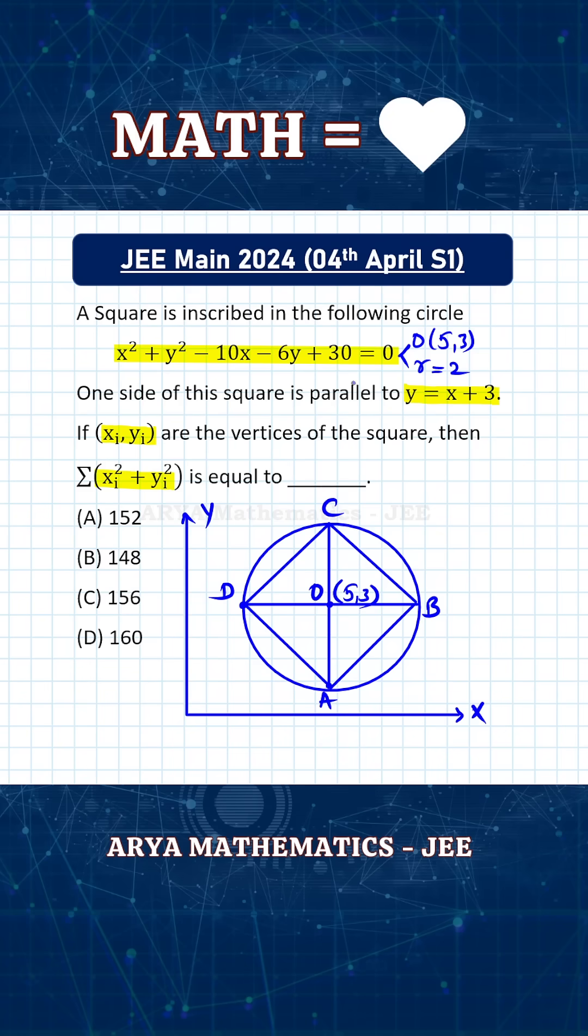Now, one side of the square is parallel to the line y = x + 3. The general method of solving this problem would be that any line parallel to y = x + 3 is y = x + k. So let's say line AB is y = x + k.